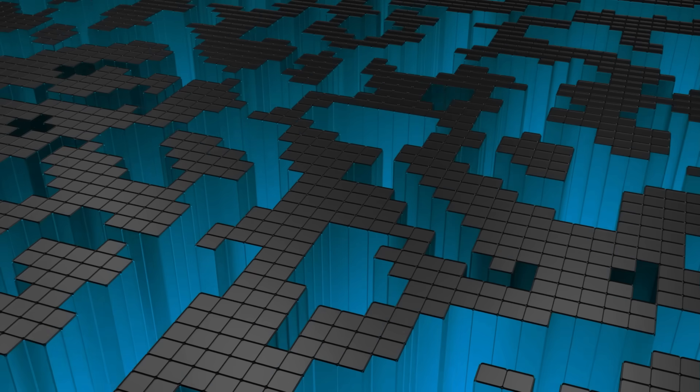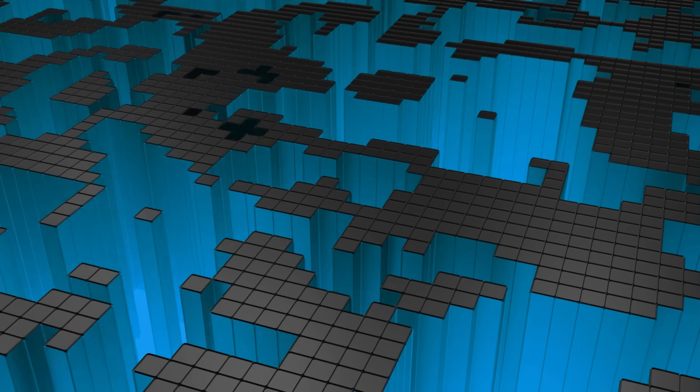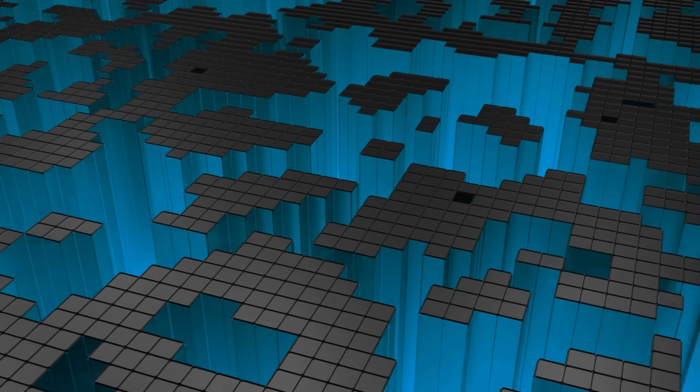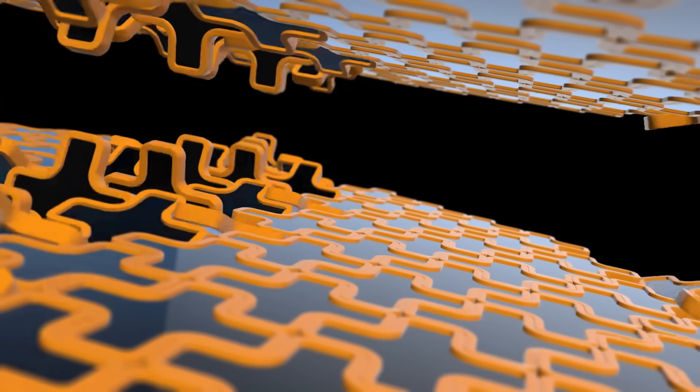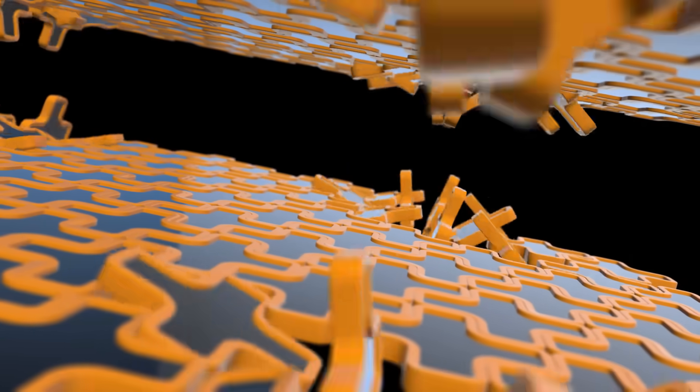Picture solving a giant puzzle. A classical computer would test one piece at a time, trying different combinations. A quantum computer, on the other hand, could test multiple combinations simultaneously, thanks to its parallel processing power.